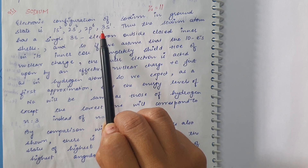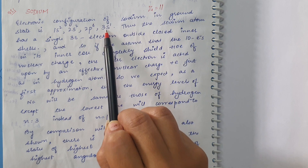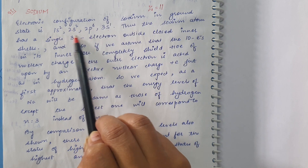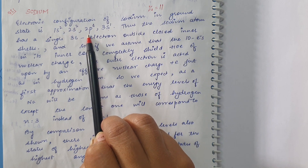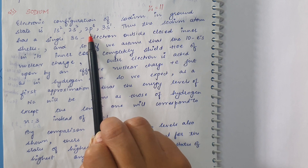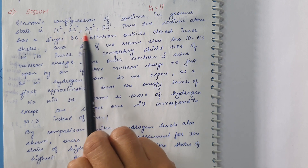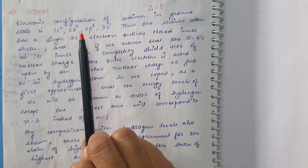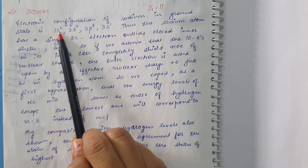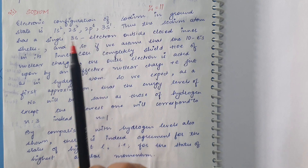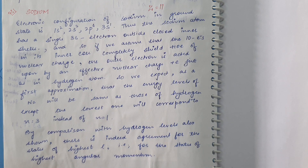The last electron enters the 3s orbital, and these 10 electrons are present in inner shells, forming the inner core of sodium atom. Because of these 10 inner-core electrons, the nucleus of the sodium atom has an effective nuclear charge of +10e. These 10 electrons shield the valence electron from feeling that full 10e nuclear charge.